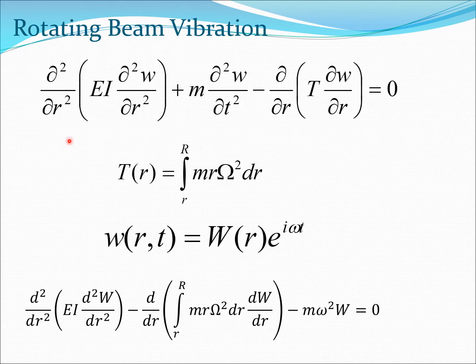So now let us go back to our partial differential equation for rotating beam vibration and we try to enforce the simple harmonic motion concept here. Essentially we say wrt is capital wr e to the power i natural frequency into time and we substitute this back into the p d e. Of course the result is the time variable is removed out from this equation but this equation still remains extremely difficult if not impossible to solve.